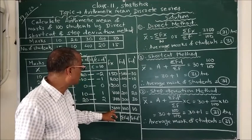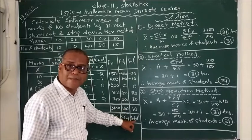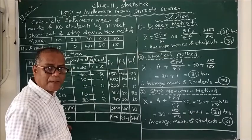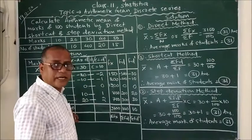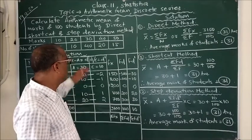Ultimately we have to find the sum: summation fx is 3100, summation fd is 100, and summation fd dash is 10. Summation f which is the number of observations is 100, also represented by the letter n.